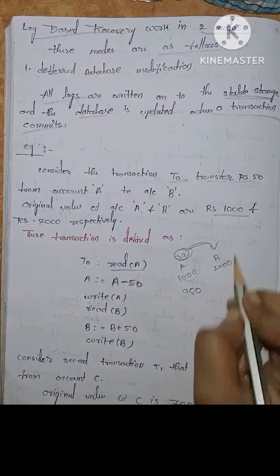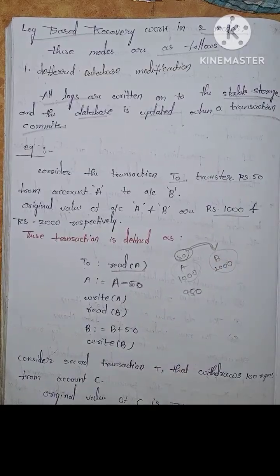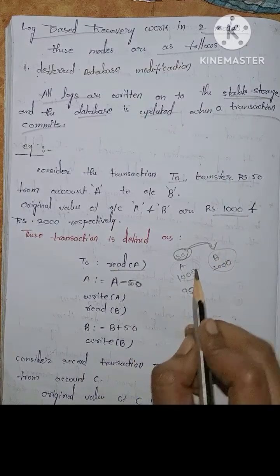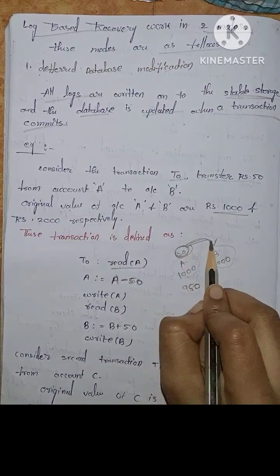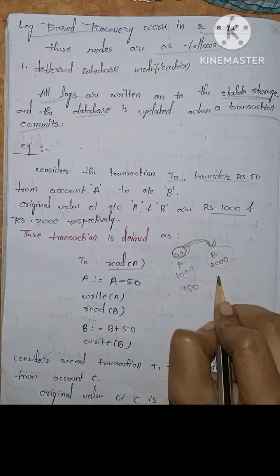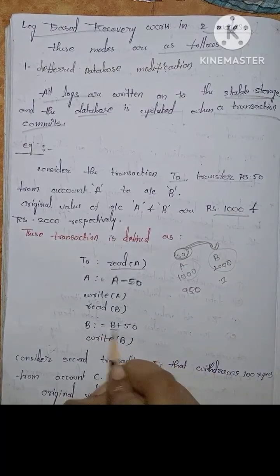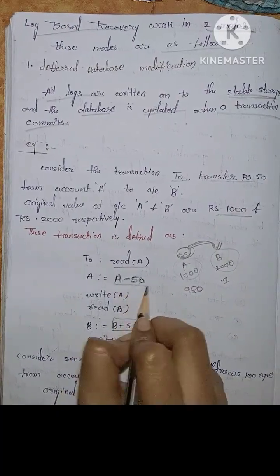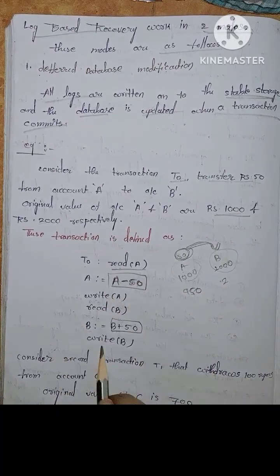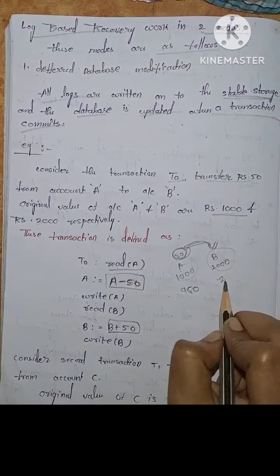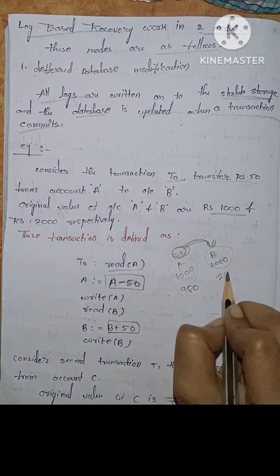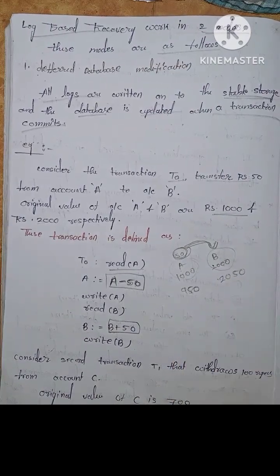Read B. We read account B which has 2000, then compute B plus 50. Write B — now B has 2050.